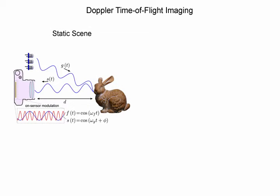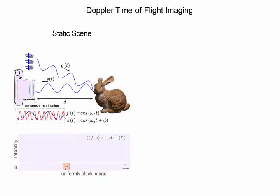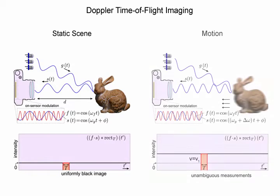For this purpose, we designed the illumination and modulation frequencies of the time-of-flight camera to be orthogonal within the exposure time. This results in a constant, dark image when photographing a static scene. The Doppler shifted frequency of a moving target, however, will not be orthogonal to the modulation frequency of the sensor, hence resulting in some non-zero intensity value. In fact, the intensity measurement is directly proportional to the velocity, resulting in a unique mapping between velocity and measured intensity.